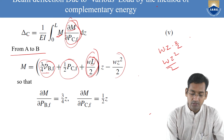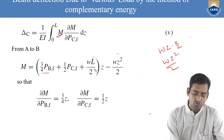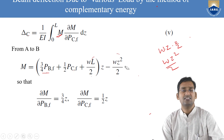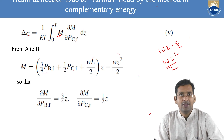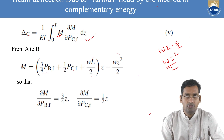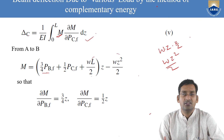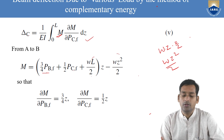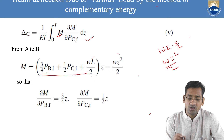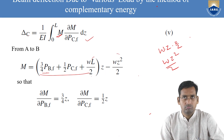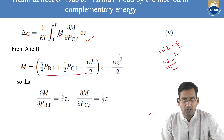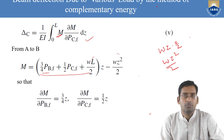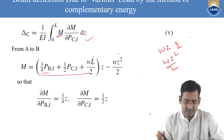Now we have the moment equation from A to B, and we also previously derived it for B to C and C to D. For δB, we need M and ∂M/∂PBF for all three segments. For δC, we need M and ∂M/∂PCF. Differentiating with respect to PBF gives ∂M/∂PBF; differentiating with respect to PCF gives ∂M/∂PCF.